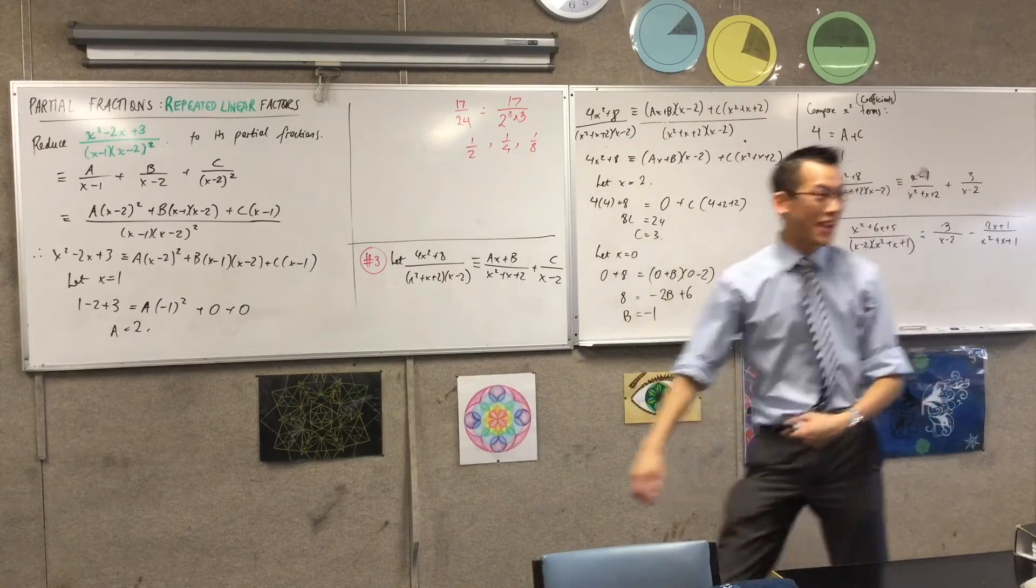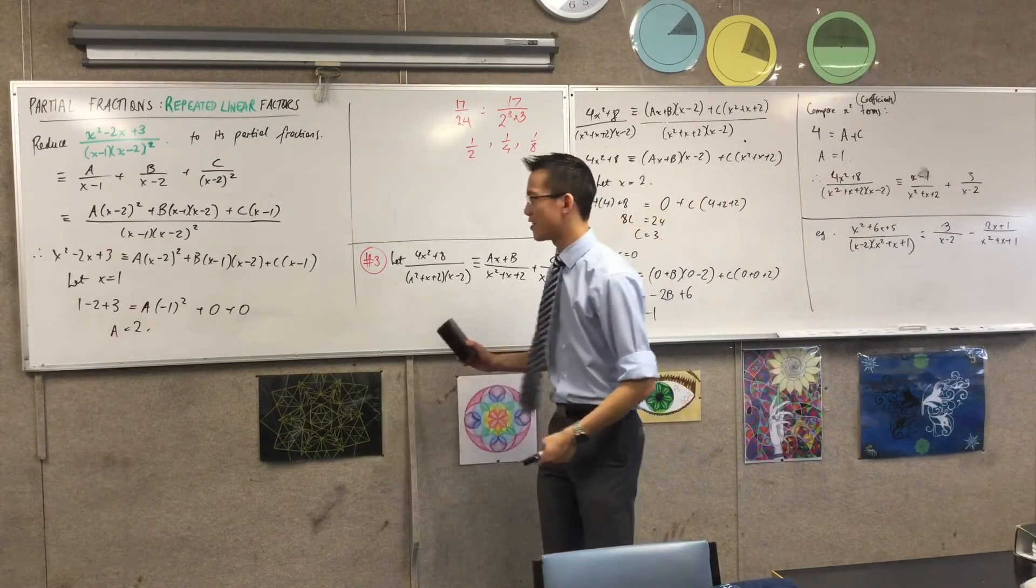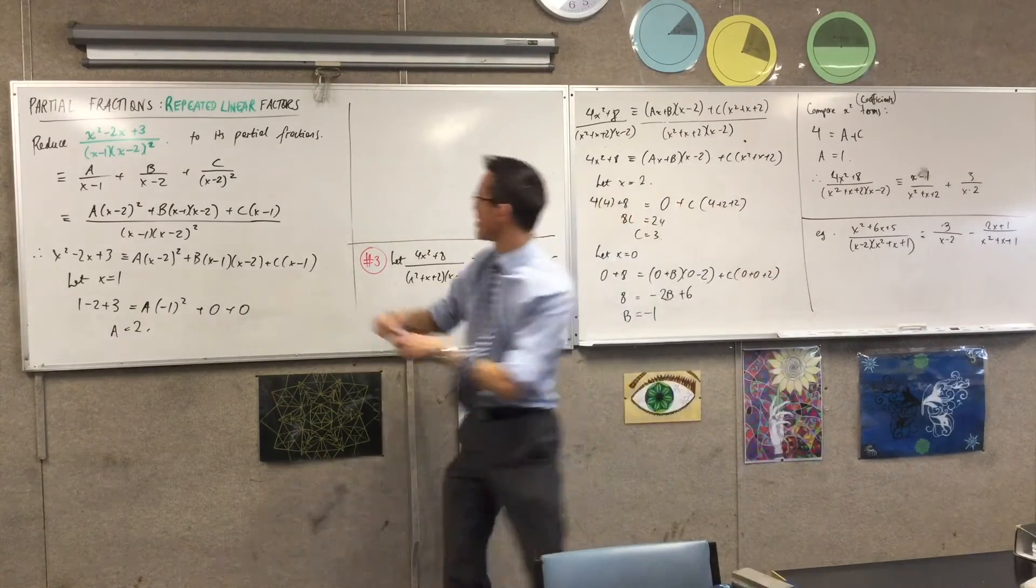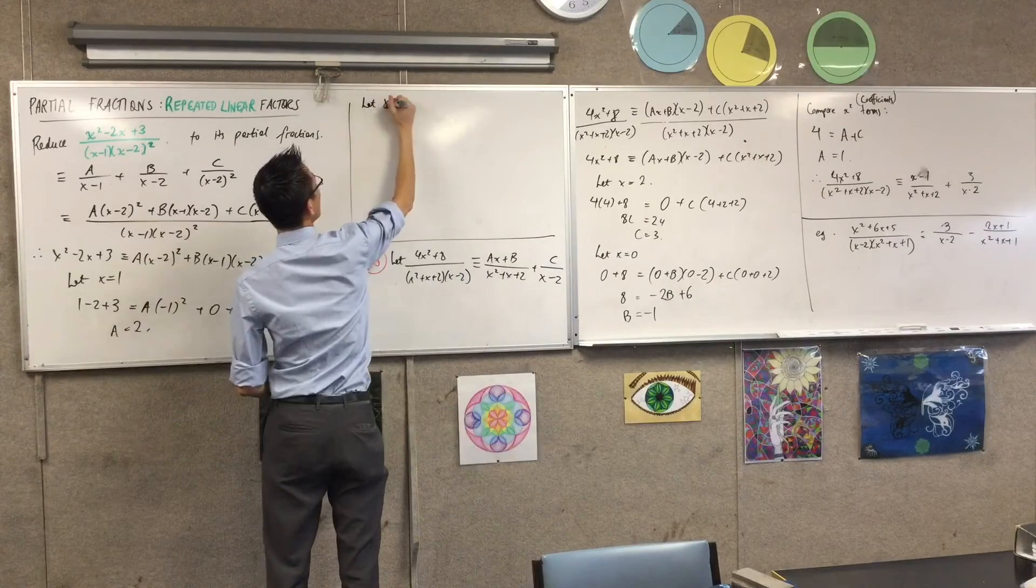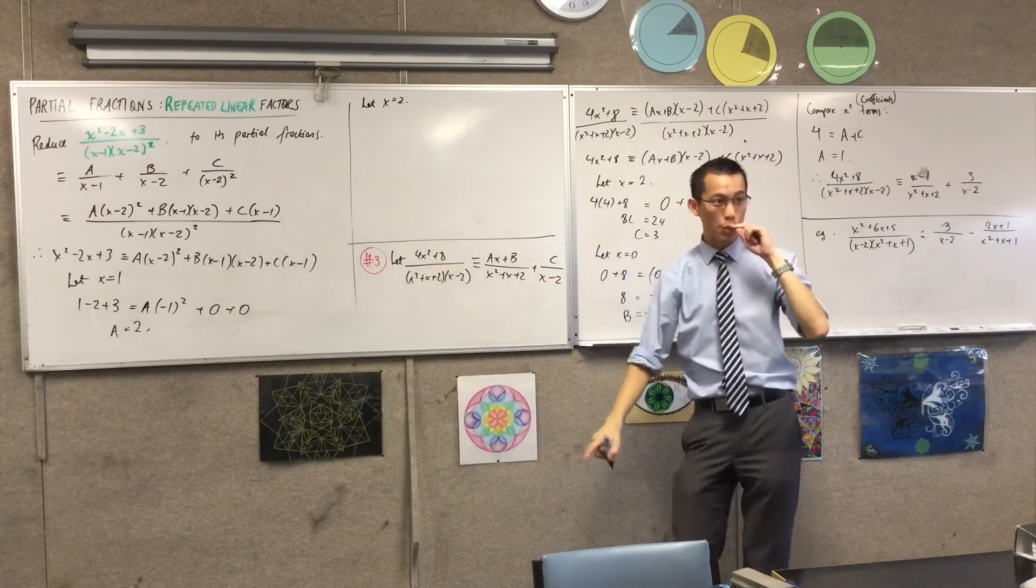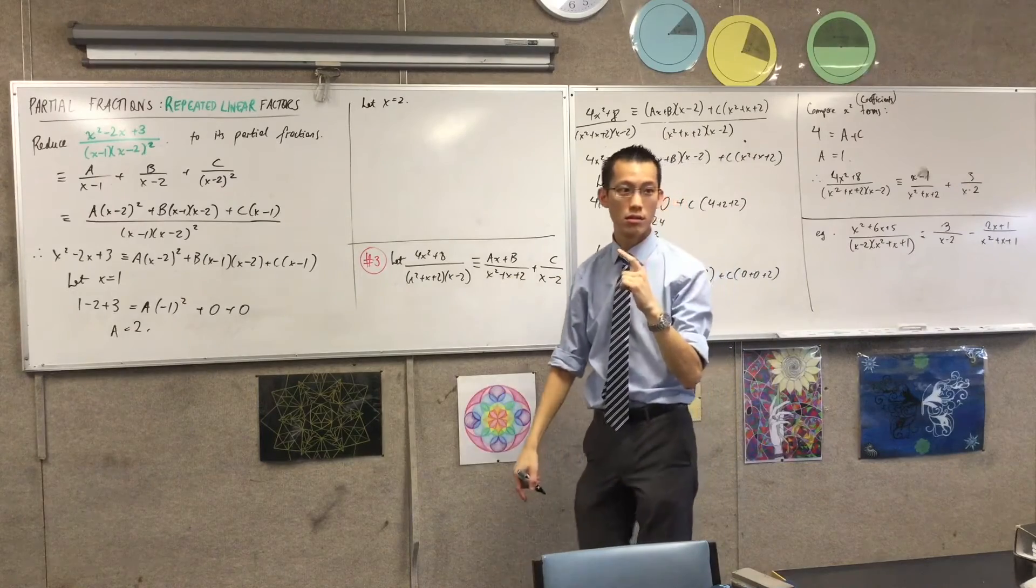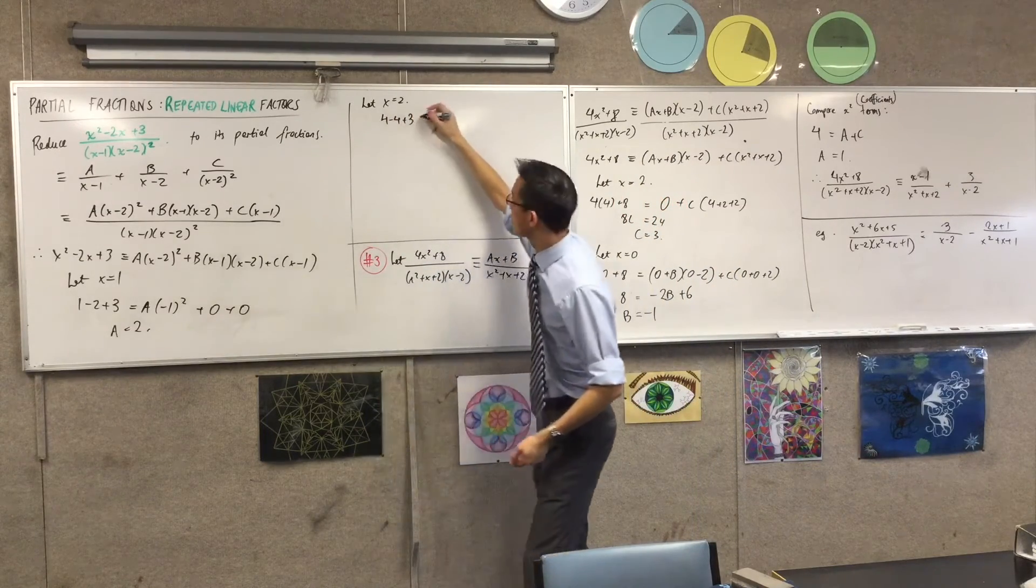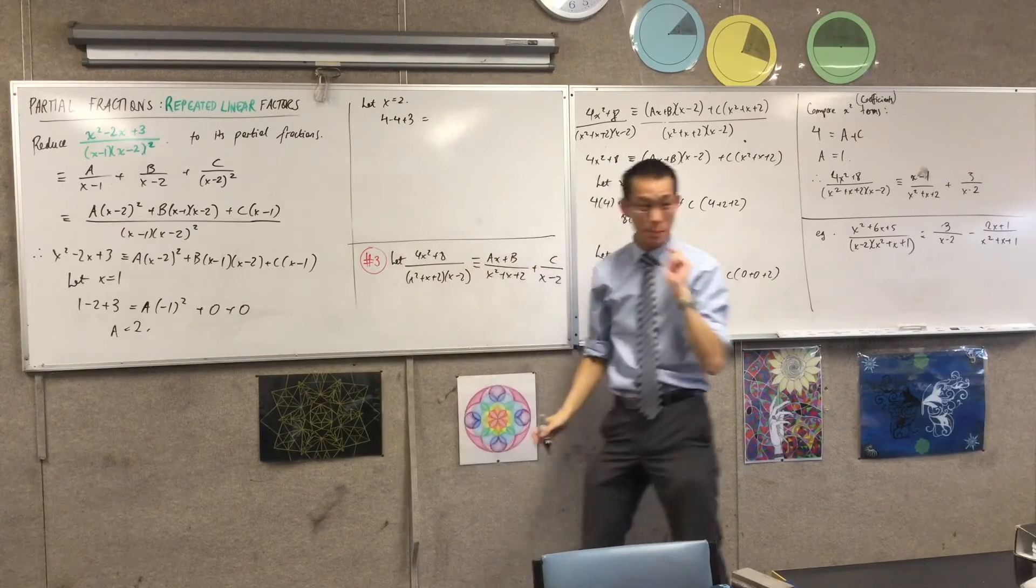Choose for me another convenient value. I just did 1, right? Oh, no. Sorry, 2. I'll go for 2. How convenient. Let x equal 2. And you can see on my left-hand side, I'm going to get 4, take away 4, plus 3. Right?